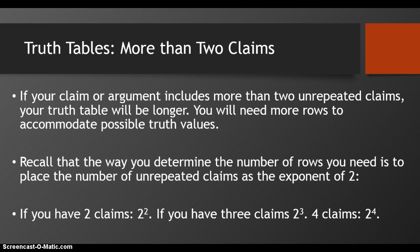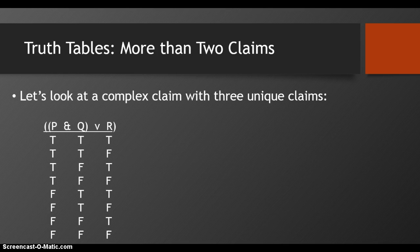If your claim or argument includes more than two unrepeated claims, your truth table will be longer — you'll need more rows to accommodate possible truth values. Recall that the way you determine the number of rows you need is to place the number of unrepeated claims as the exponent of 2. If you have two claims, that's 2 to the 2nd; three claims, 2 to the 3rd; four claims, 2 to the 4th. Let's look at a complex claim with three unique claims — this requires eight rows.